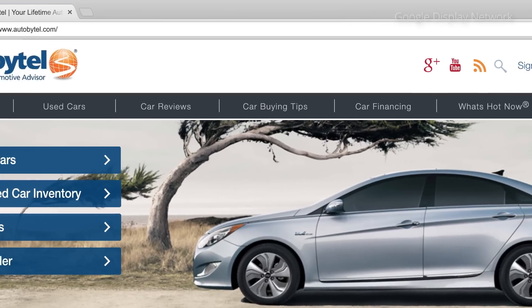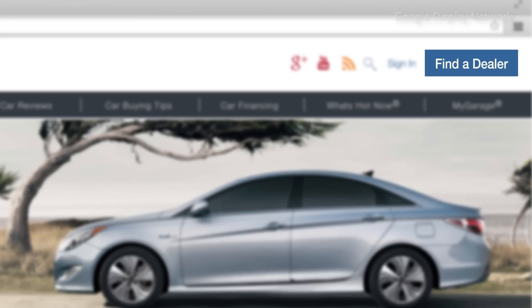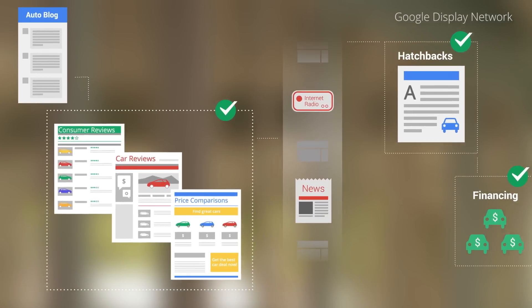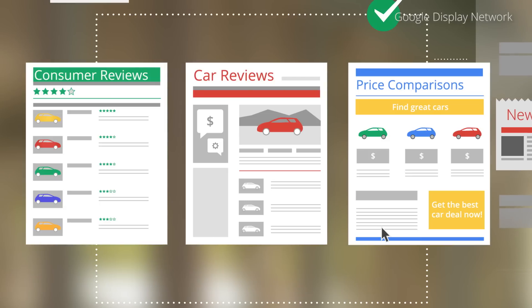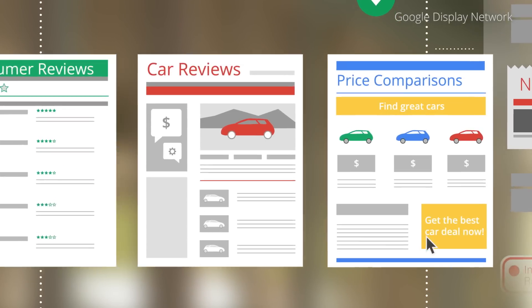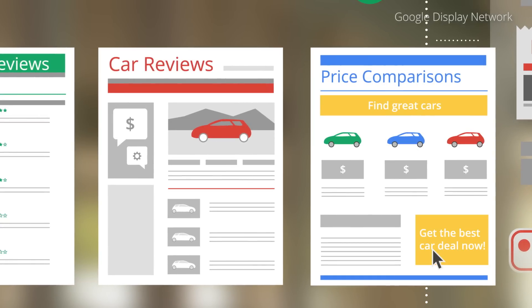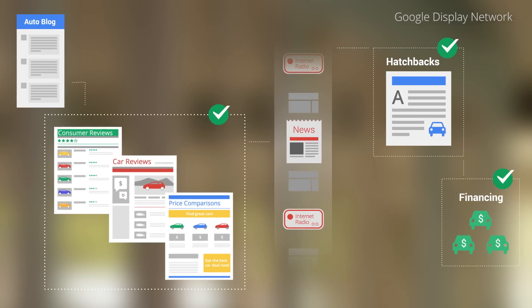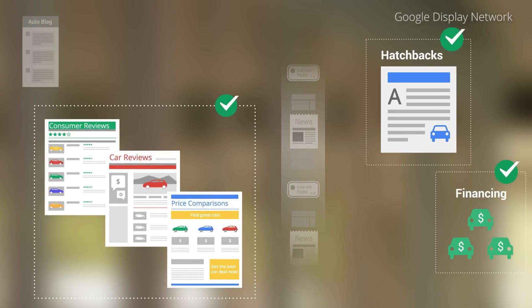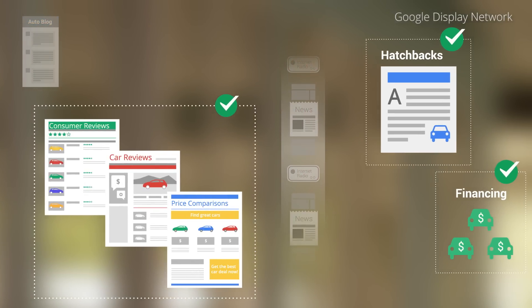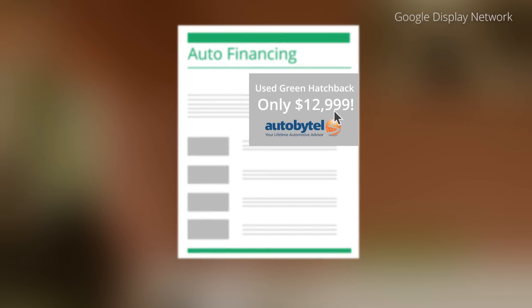Autobytel is a company that connects car buyers with dealers and manufacturers. They use AdWords to reach prospective customers interested in purchasing a vehicle. By looking at content like consumer reviews and price comparison sites, along with online behavior like clicks and conversions and related ads, it helps you connect with consumers at the exact moment when they're considering a purchase. Autobytel is able to connect with highly qualified prospective customers with messages that are highly relevant to them.